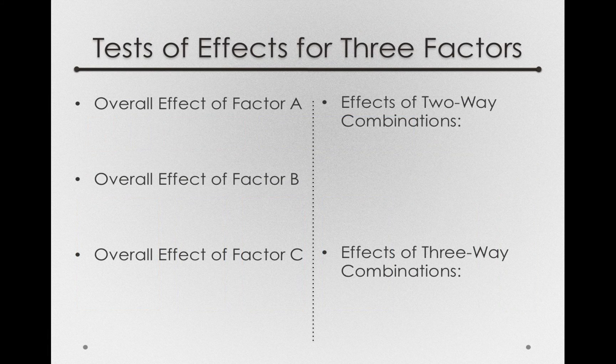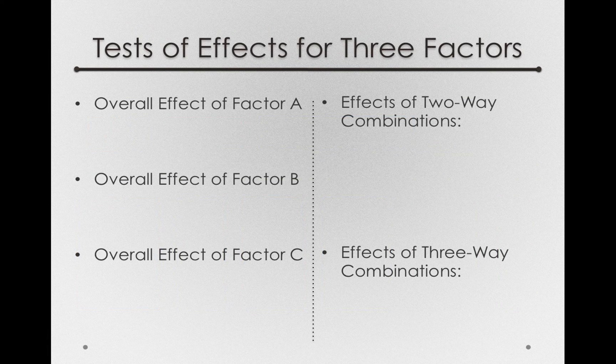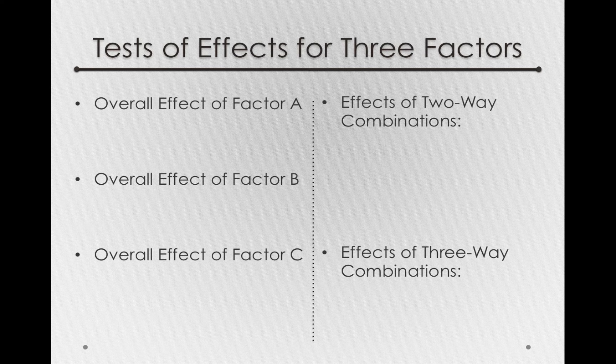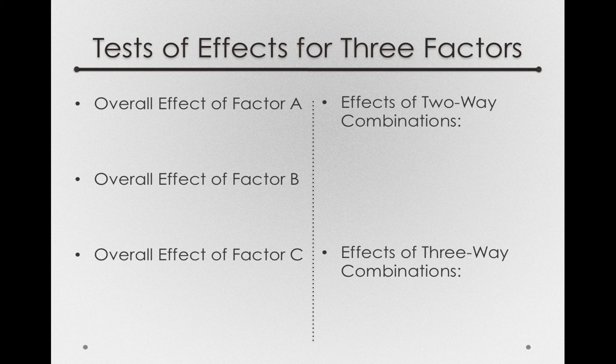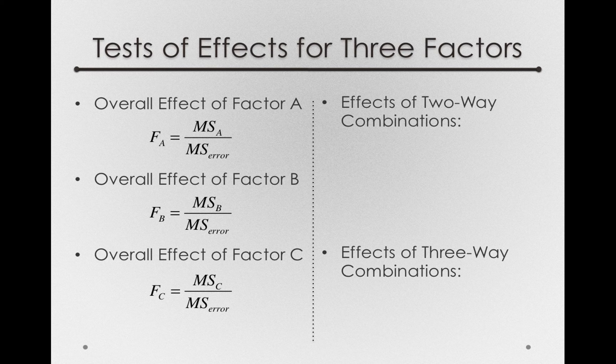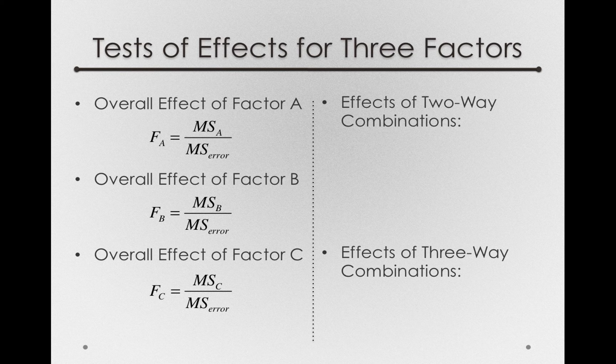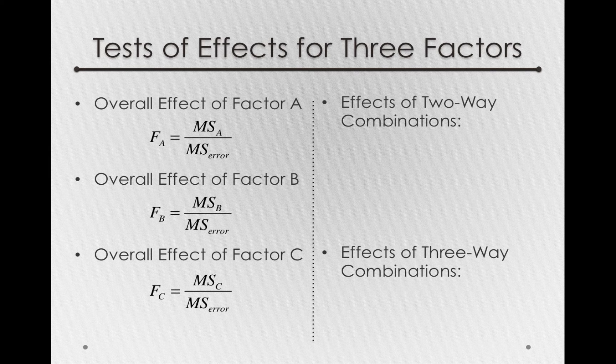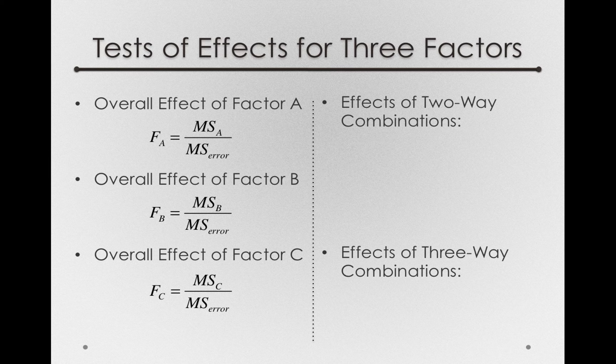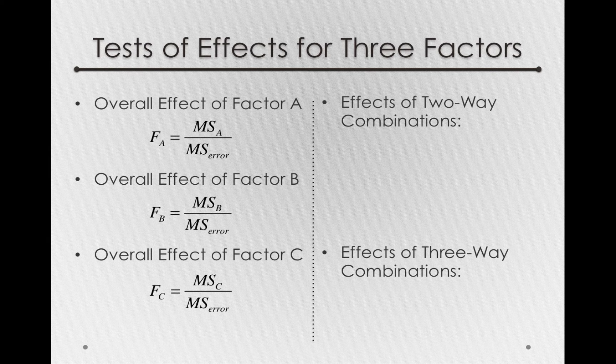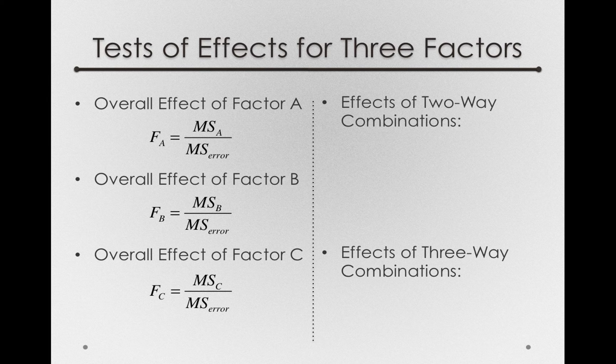As we've done before, we'll perform these tests using the analysis of variance by forming mean squares for each of these comparisons. So for the overall effects of factor A, B, and C, we have the customary mean squares that are associated with each of those factors. Remember, the mean square for A, or B, or C is really a variance based on the treatment offsets associated with A, B, or C.